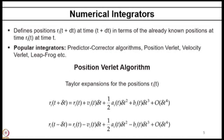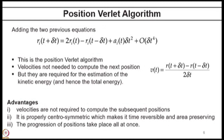The finite difference approach is used. One popular technique is the position Verlet algorithm: you write the Taylor expansion for r(t + delta t) and r(t - delta t), then add them to get rid of the linear velocity term. You obtain r(t + delta t) = 2r(t) - r(t - delta t) + a(t)·delta t². This is called the position Verlet algorithm — a very neat technique. In this technique, the velocity is obtained after you get the trajectory, since you know positions at t, t+delta t, and t-delta t. You store the velocity to check kinetic energy and calculate other properties, giving the full phase space information.